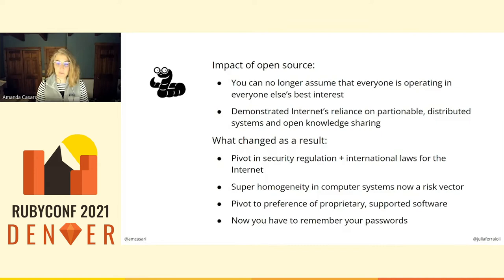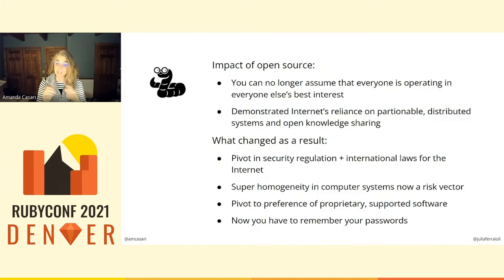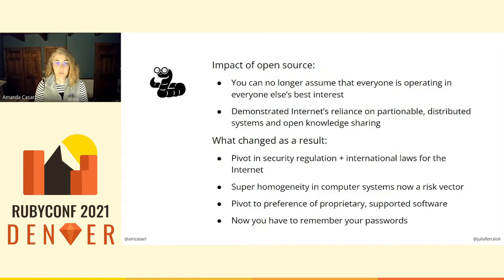The reaction to and recovery from the Morris worm also demonstrated the robustness of the internet when designed as a partitionable and distributed system that prioritized open knowledge sharing. Morris quickly worked to move fixes to the worm onto multiple mailing lists, though some actions were delayed because of the effectiveness of the worm. System administrators did work together very well to isolate the damage. Because of the Morris worm, the internet and software has changed: we had a pivot in security regulation and international laws, super homogeneity was seen as a risk rather than efficiency, and there was a hard lean in industry and government to move to proprietary systems. And also because of the exploit the Morris worm used to access systems without logins, you and I now have to remember all of our passwords.